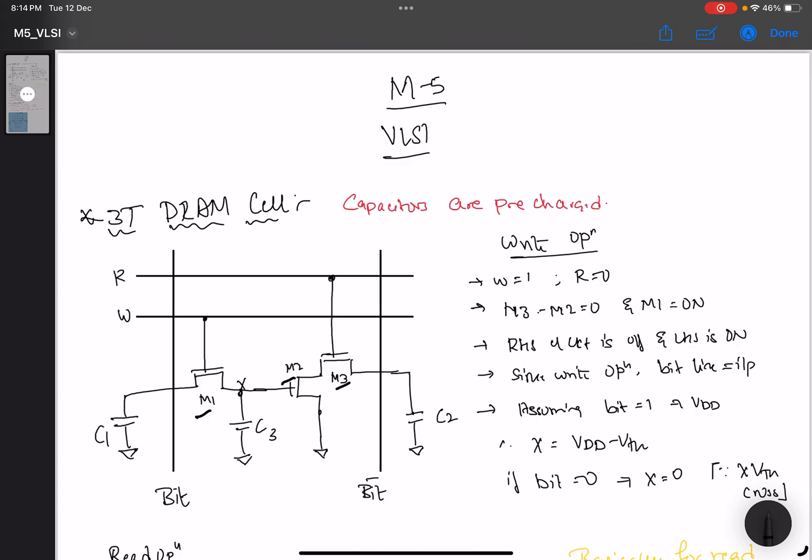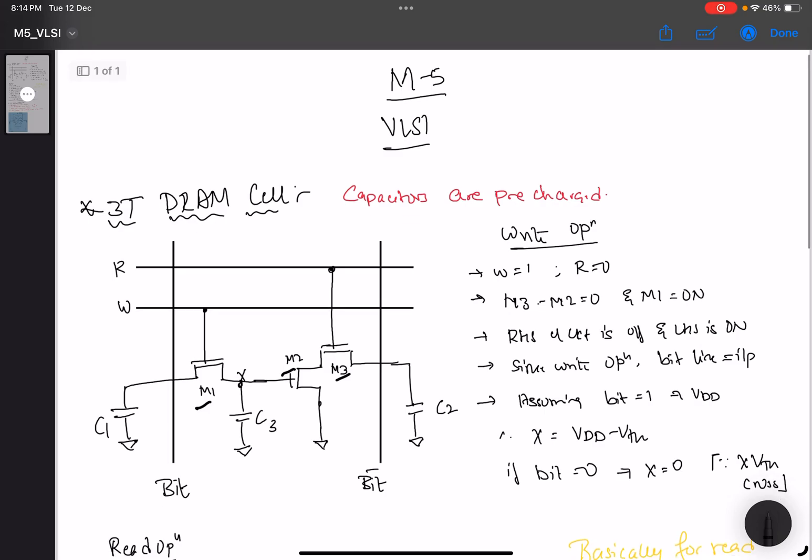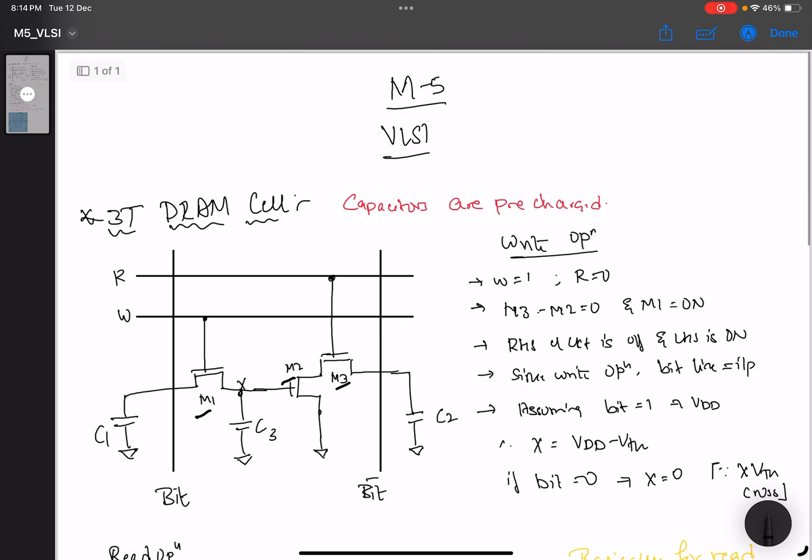X is the node basically. Now there are two major operations: write operation and read operation. If we consider the write operation, for write, W should be 1, R should be 0. So since W is 1 and R is 0.